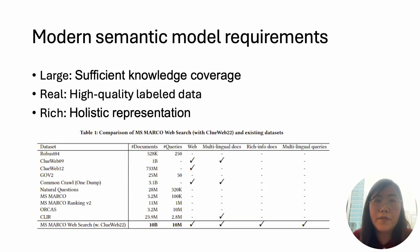For modern information retrieval systems, the core is the semantic understanding model, which can capture users' intents as well as the rich meanings of a document. Training a high-quality semantic understanding model requires large-scale data to achieve sufficient knowledge coverage, real high-quality labels to align with specific tasks, and rich information to provide a more holistic view of the data.